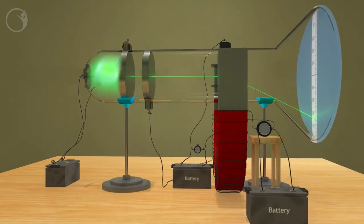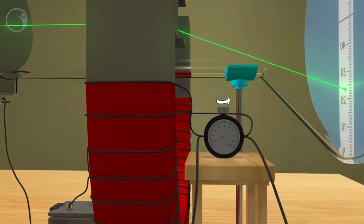So going by the direction of the thumb, the beam would actually move upwards. The displacement would be proportional to the magnitude of the magnetic field. If we increase the magnetic field, the beam will move further up.